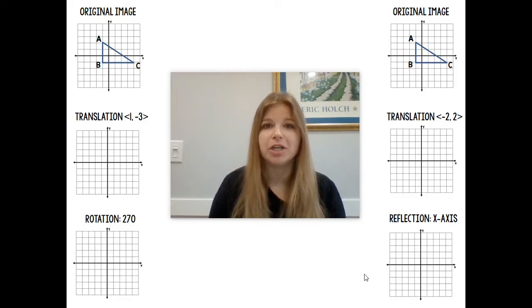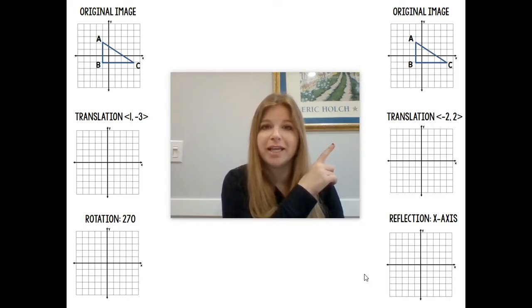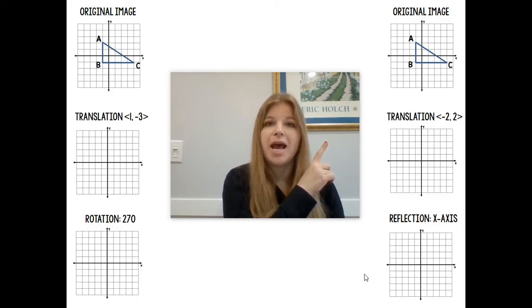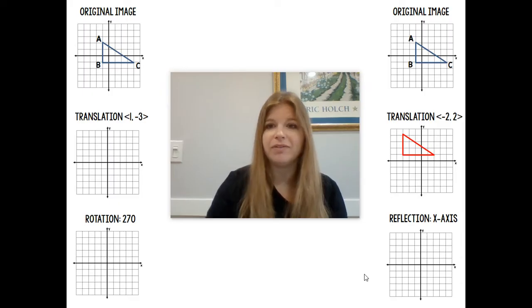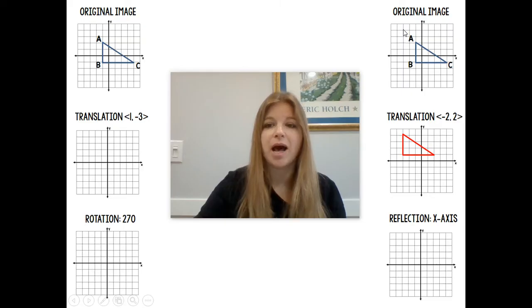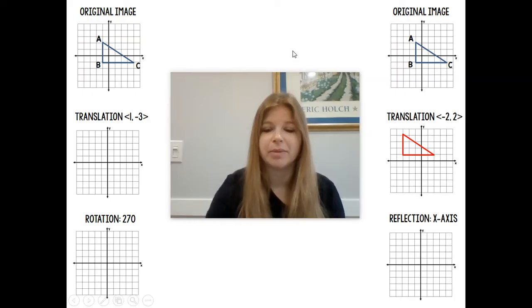The first one — I can see my original image of triangle ABC. If I wanted this triangle to undergo a translation of negative 2, 2, that would mean I'd have to move two units to the left (that's what my x-translation is telling me), and then my y-translation is telling me to go two units up. So if I take figure ABC and move it two units to the left and two units up, it would land at point A at negative 3, 4, and everything else follows that same translation pattern.